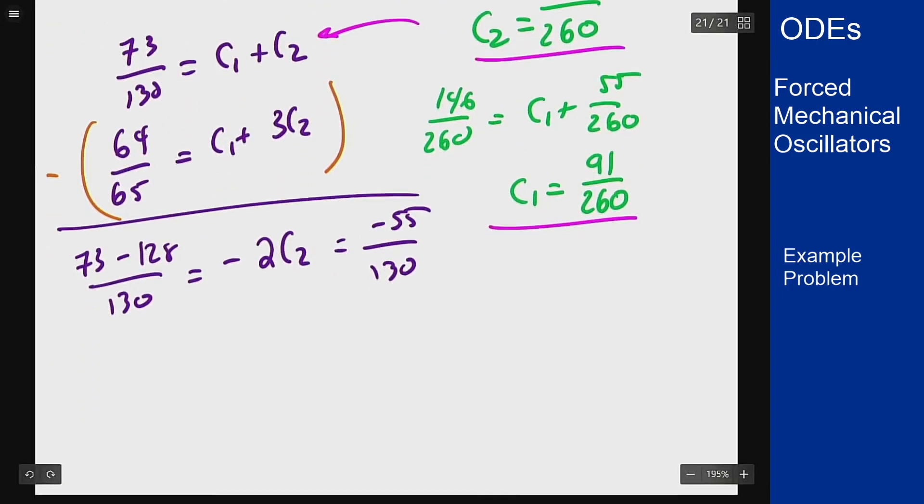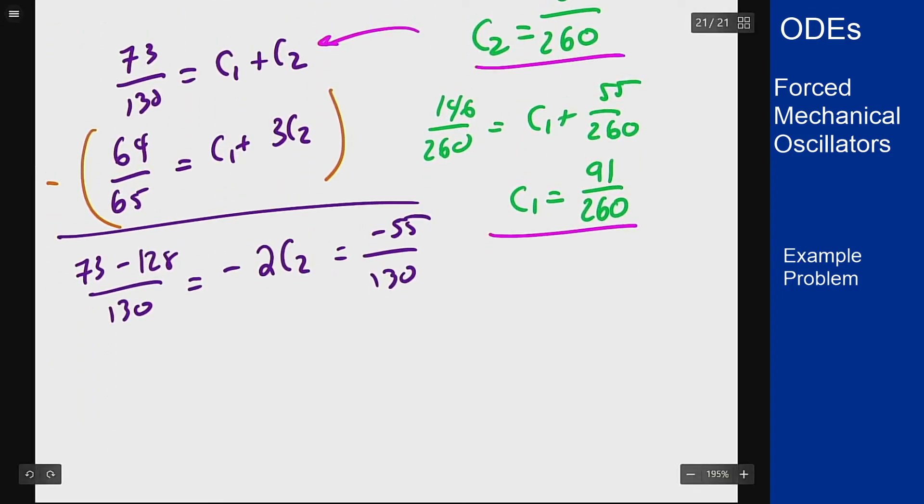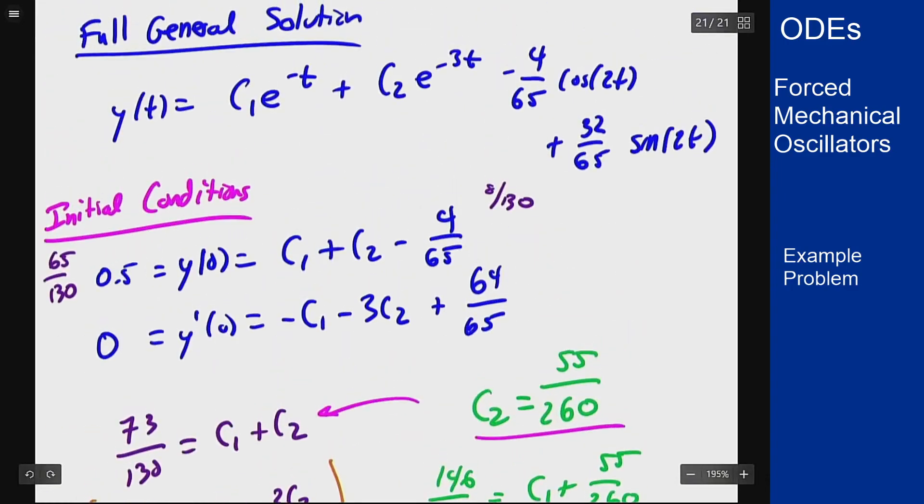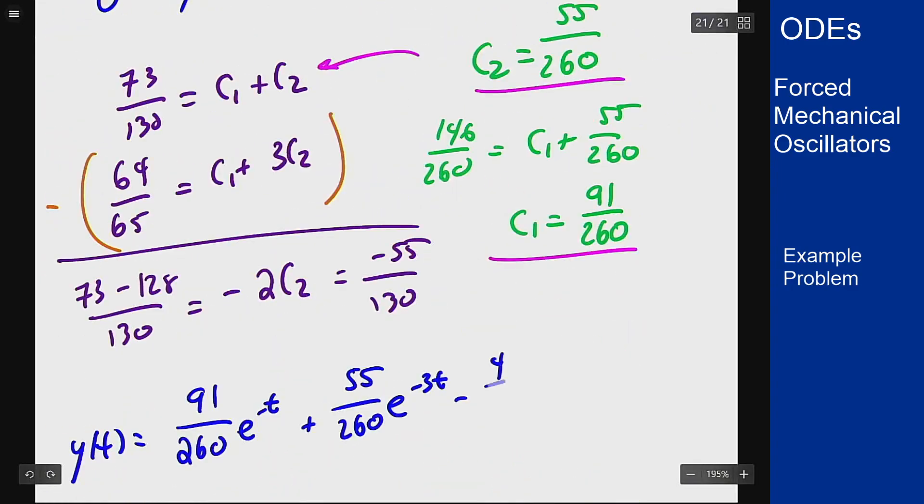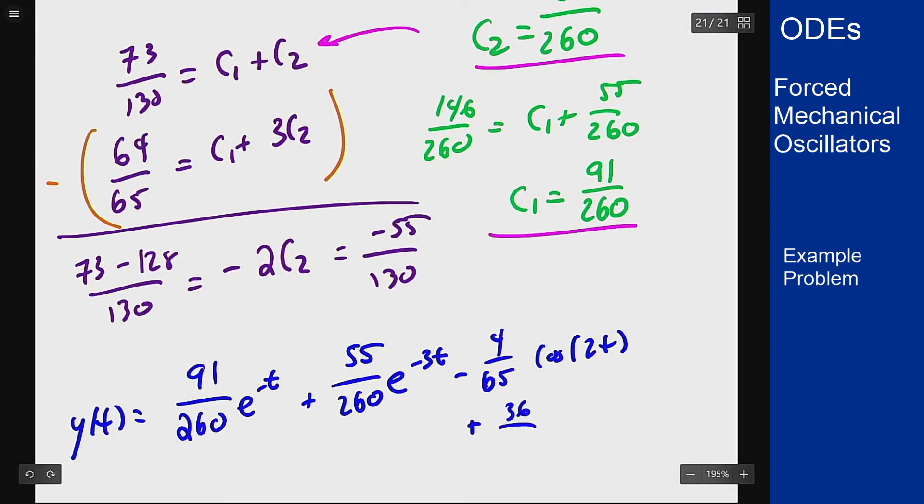Thus we can finally write the entire solution here. Our solution y of t is going to be 91 over 260 e to the minus t plus 55 over 260 e to the minus 3t minus 4 out of 65 cosine of 2t plus 32 out of 65 sine of 2t.